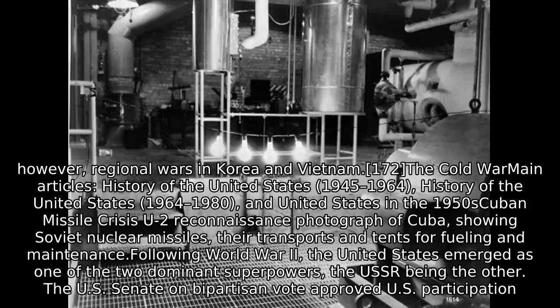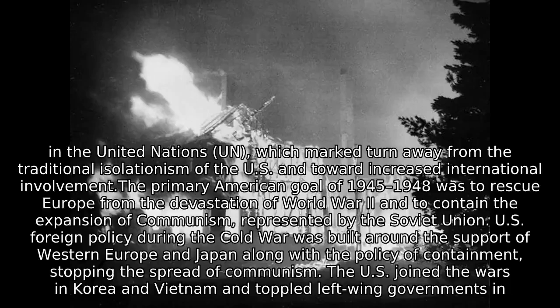Following World War II, the United States emerged as one of the two dominant superpowers, the USSR being the other. The U.S. Senate on a bipartisan vote approved U.S. participation in the United Nations, which marked a turn away from the traditional isolationism of the U.S. and toward increased international involvement. The primary American goal of 1945–1948 was to rescue Europe from the devastation of World War II and to contain the expansion of communism represented by the Soviet Union. U.S. foreign policy during the Cold War was built around the support of Western Europe and Japan along with the policy of containment — stopping the spread of communism. The U.S. joined the wars in Korea and Vietnam and toppled left-wing governments in the Third World to try to stop its spread.